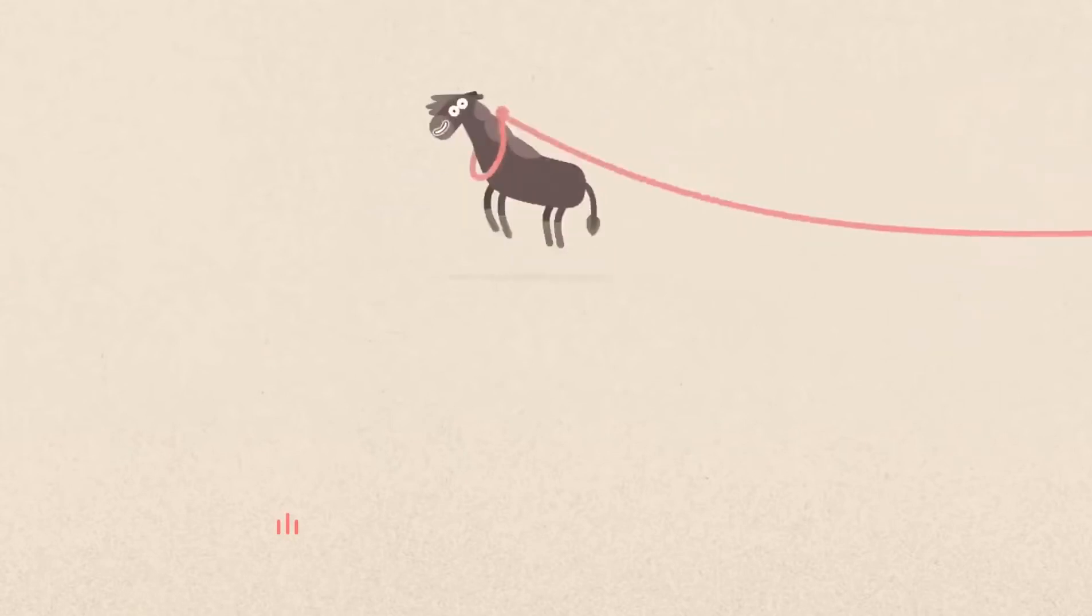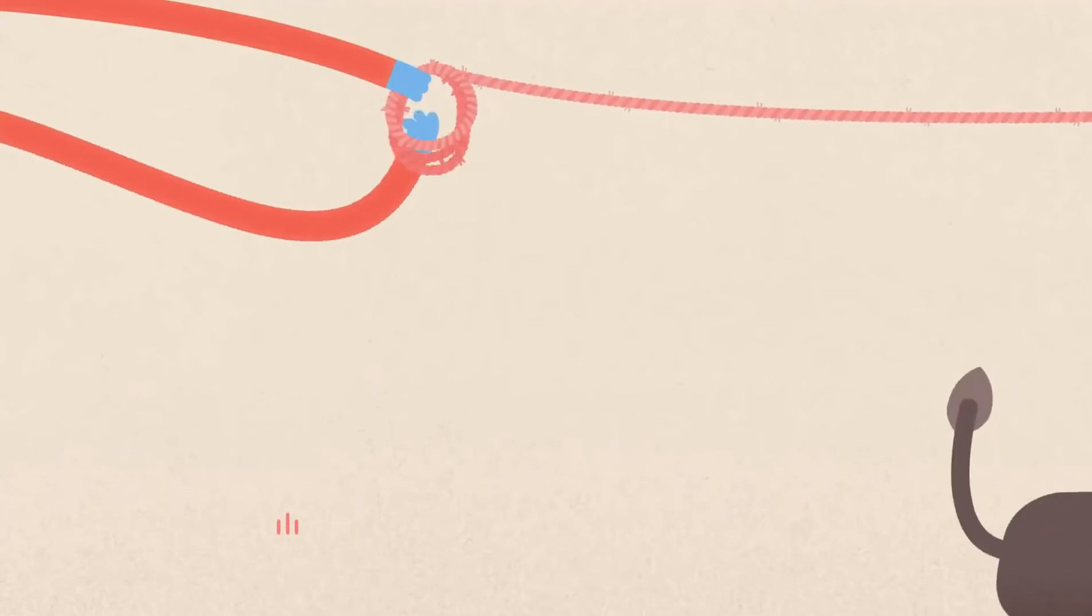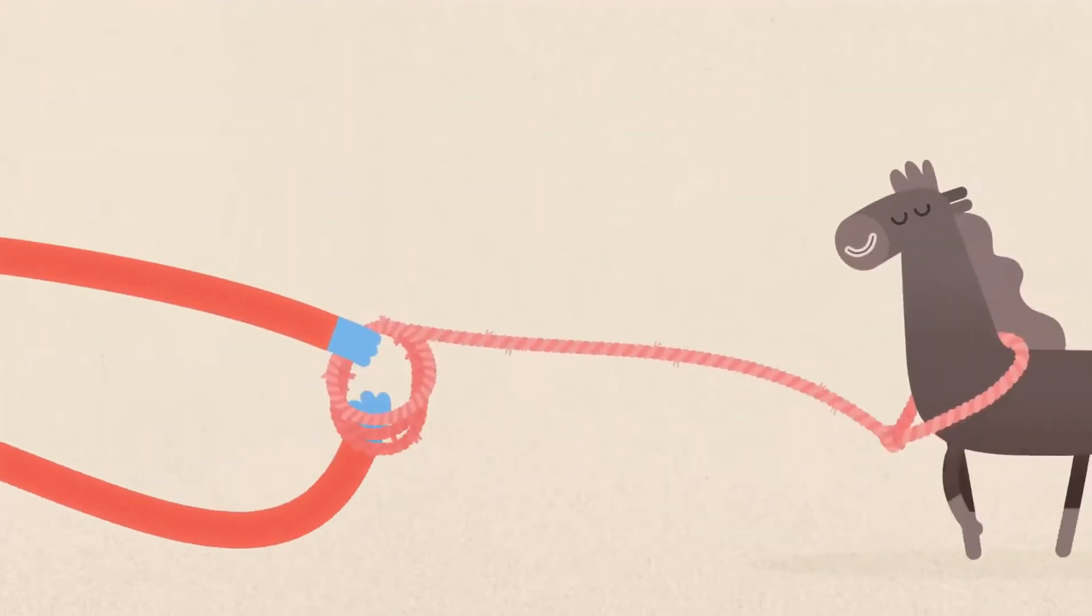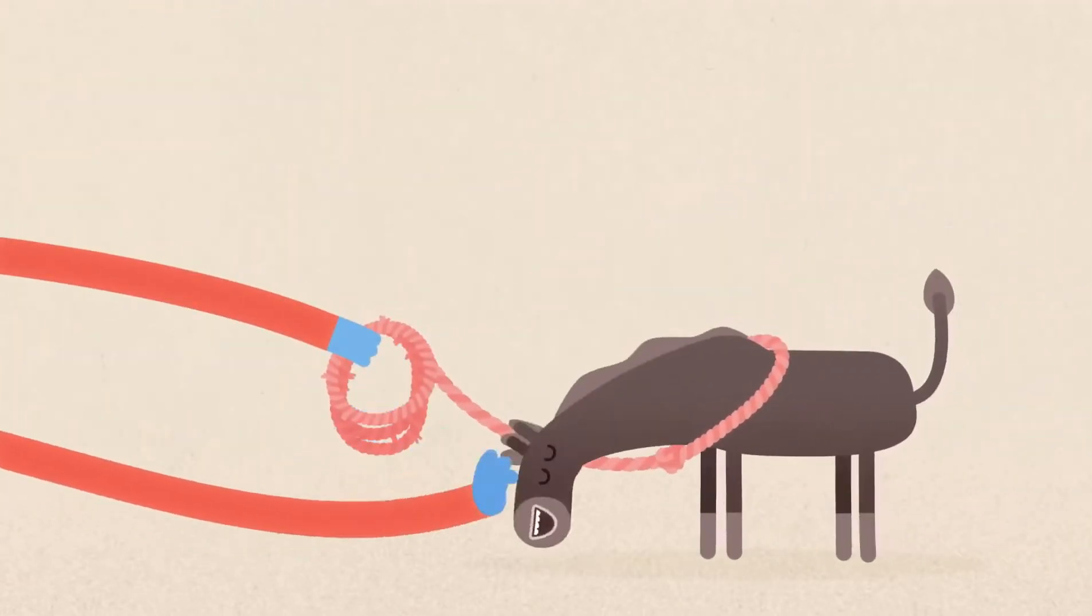The horse runs around, feeling like it's got all the space in the world. But very slowly, the rope's brought in, and the horse adjusts to this feeling, until it comes to a natural place of rest.